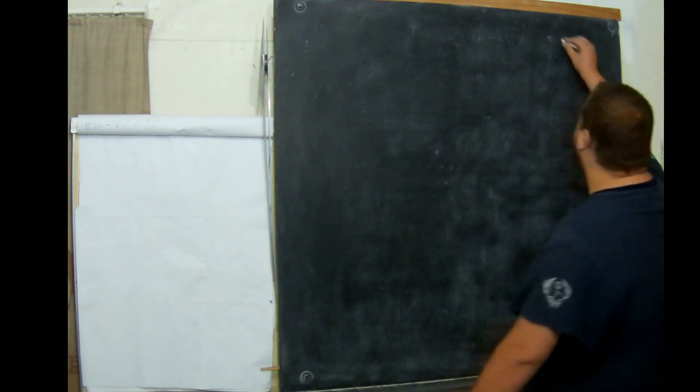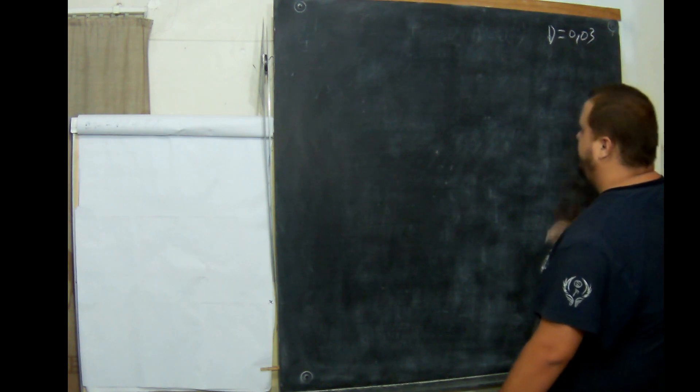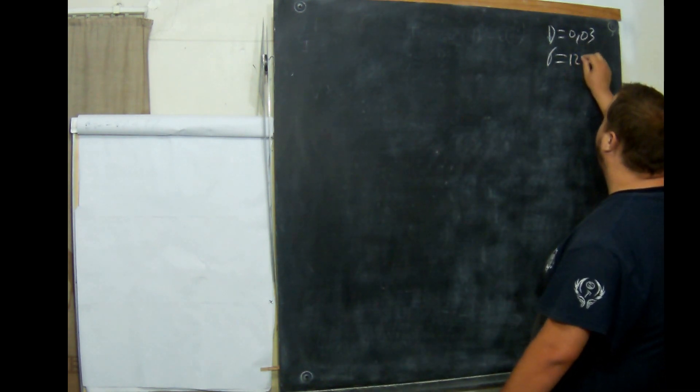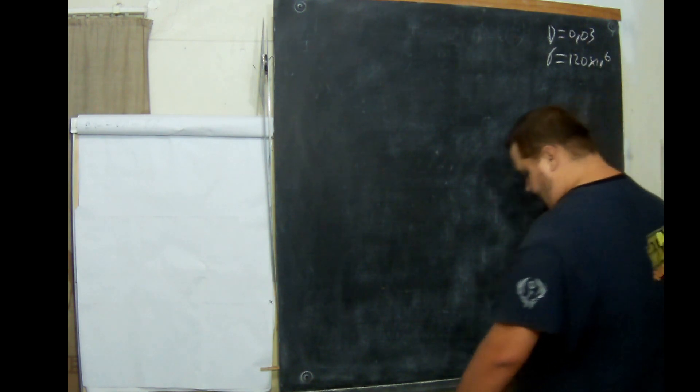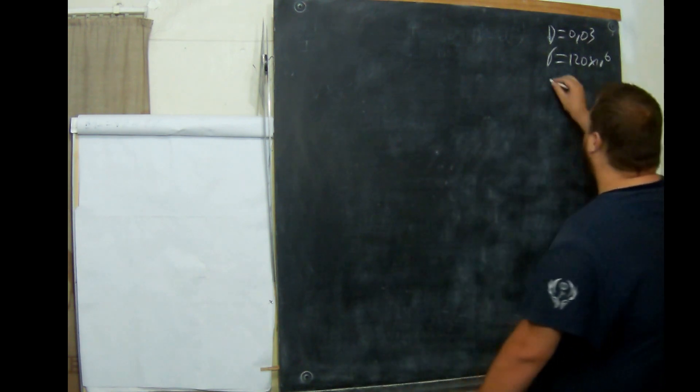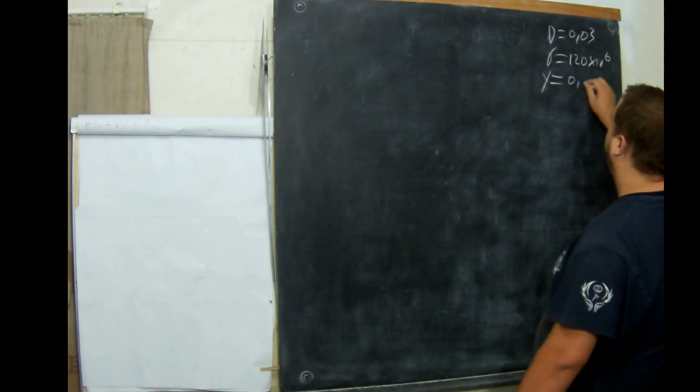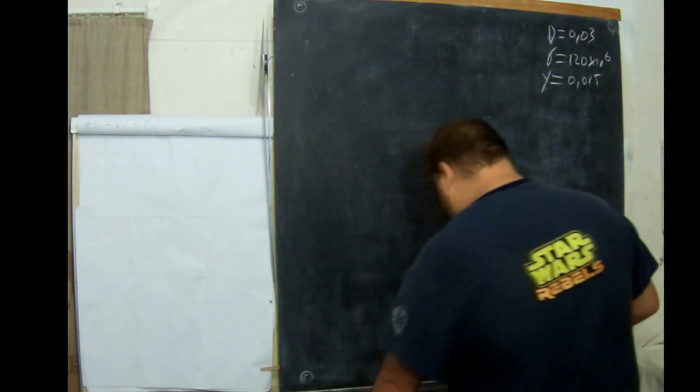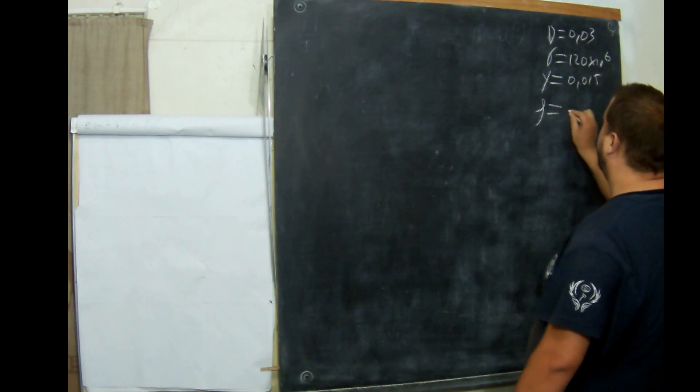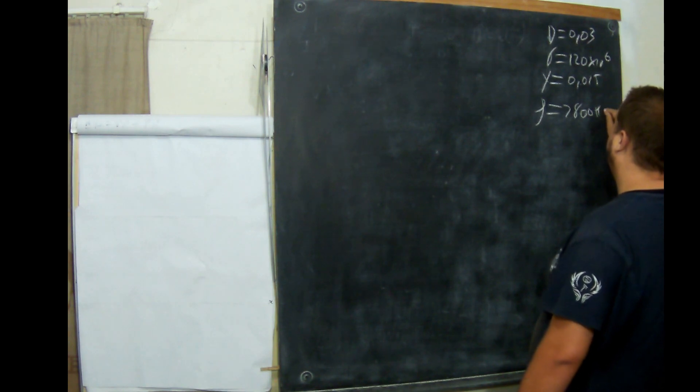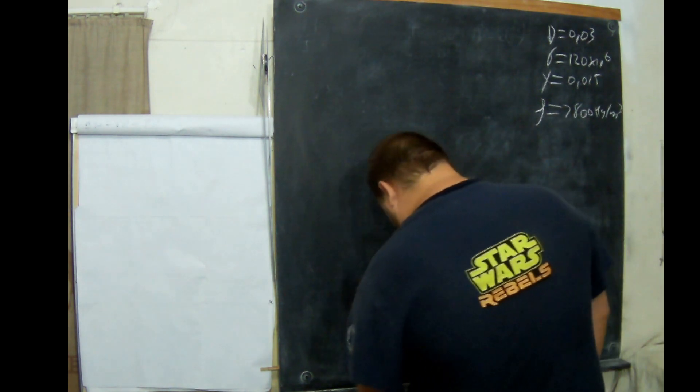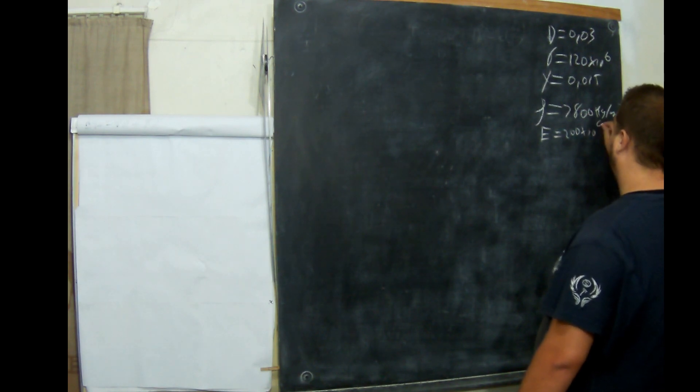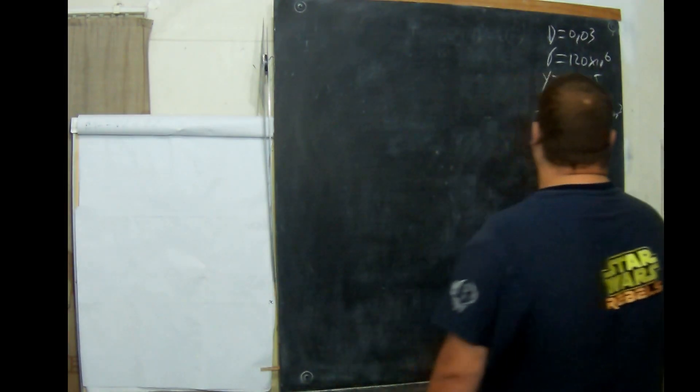A solid shaft. Its diameter is 0.03. Stress σ is 120 times 10 to the 6. And the deflection Y equals 0.015. The density is 7,800 kg per meter cubed. And modulus of elasticity E equals 200 times 10 to the 9. That is all we are given.